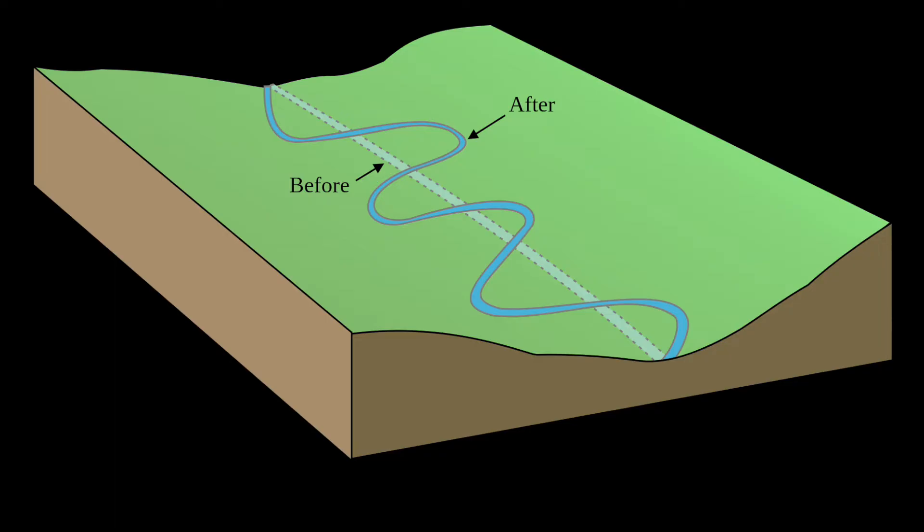Now in the upper course — watch my other video if you don't understand it — there is a lot of vertical erosion. However, there is more energy in the middle course and this is where the meanders are found. Because there is more energy, lateral erosion can happen, and this is another reason why the bends occur.